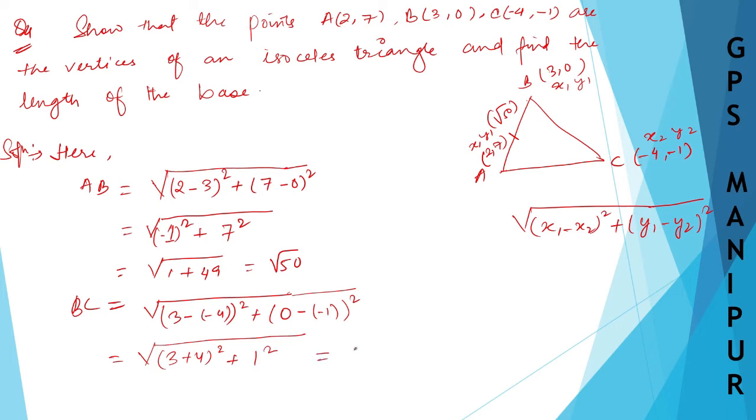Which will be equal to root over 3 minus into minus plus, 3 plus 4 whole square plus 0 minus into minus plus, 0 plus 1, it is 1 square. So 3 plus 4 is 7, 7 square plus 1 square is 1. 7 square is 49 plus 1 root, which will be equal to root over 50 again.